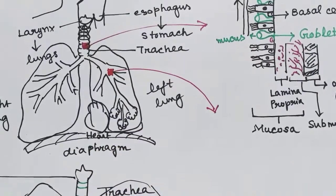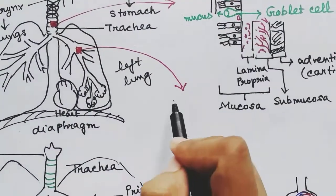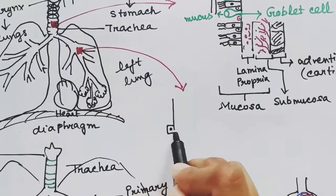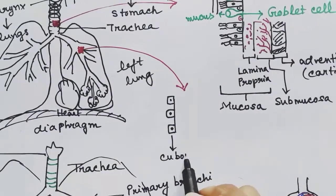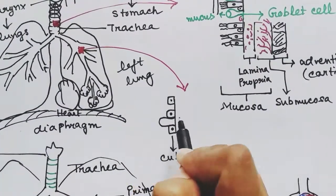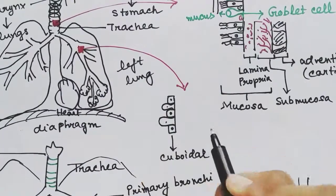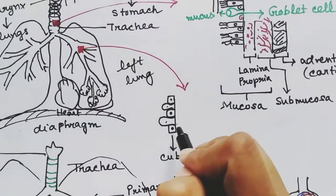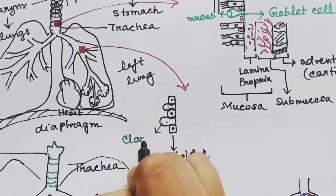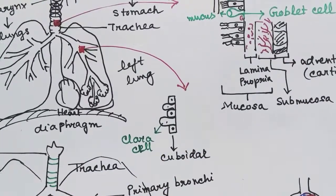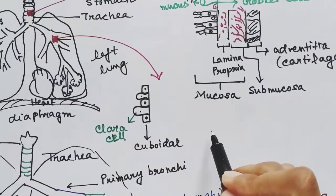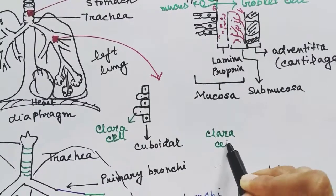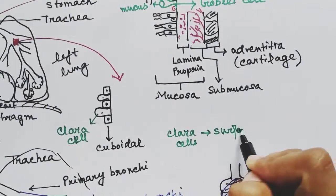So adventitia will be absent in the bronchioles. The cells of this region are cuboidal in shape. Another type of cell is also present here—these are called Clara cells. The function of Clara cells is to release surfactant and to detoxify the air coming inside.